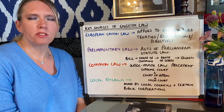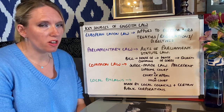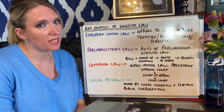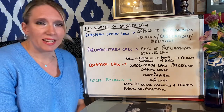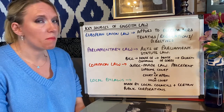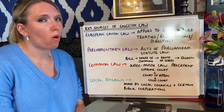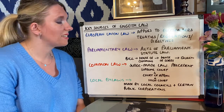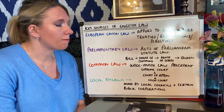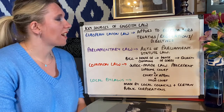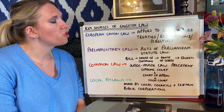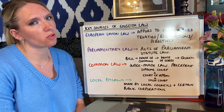Treaties are the big, almost contracts between the member countries. So when we joined the EU we signed a treaty, and when we left we signed a treaty. Regulations are laws that the European Union set that every member state must follow — no questions asked. They automatically become law, so we didn't have to do anything when we were members for those to be legally binding. Perhaps one of the most famous regulations was the ability for countries to fish in waters that didn't belong to their own country.